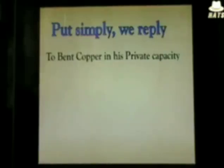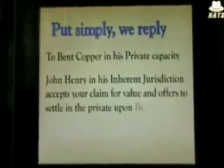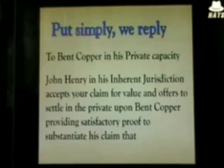Put simply, we reply to the officer in his private capacity and say: 'John Henry, in his inherent jurisdiction, accepts your claim for value and offers to settle in the private, providing satisfactory proof to substantiate his claim that the claim was addressed to you but was served on John Henry.' It's that simple. The officer is now required to testify under his own full commercial liability that John Henry is 'you' — and of course they cannot do that. So you rebut their claims right there and they have to go away. All they're doing is coming in as mercantile agents and raiding your trust account, making you the customer so that you pay.